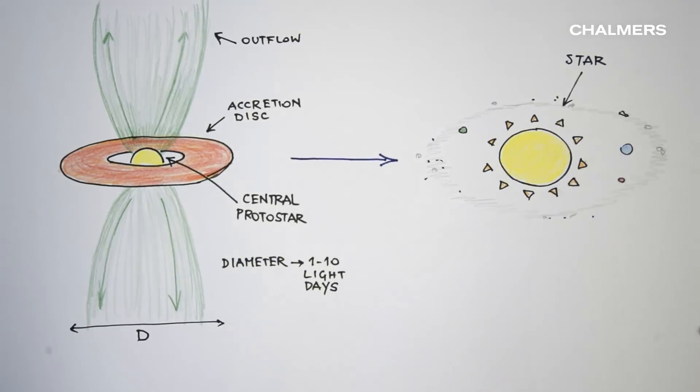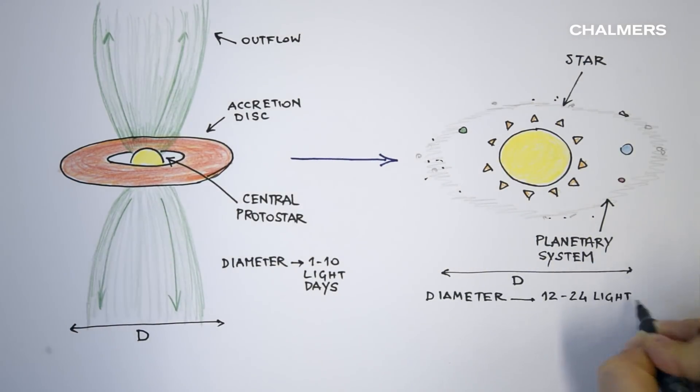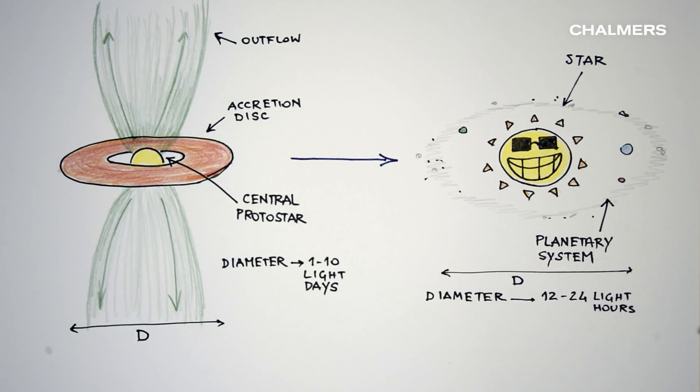Because the star is so bright, part of the surrounding cloud is blown away and the remaining material may eventually form a planetary system, perhaps similar to the one we are living in.